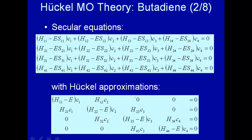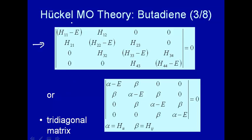Making the Huckel approximations, we have lots of zeros. Along the diagonal we have H11, H22, H33 — these terms contain energy. Along the line right above the diagonal we have non-zero terms, and everything else is zero. Same below the diagonal — terms right below the diagonal, and everything else is zero. Following the variation method, we set the determinant of these coefficients equal to zero. Changing nomenclature, H11 = H22 = H33 = alpha along the diagonal, so we have alpha minus E. Along the off-diagonals we have beta, where H12 = H21 and so on. So we just have two parameters: alpha and beta. That's the Huckel approximation.